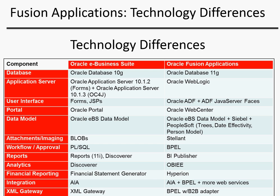The main user interface for the E-Business Suite is Oracle Forms along with some Java Server Pages. In Oracle Fusion Applications, a technology called Oracle ADF — Oracle ADF Java Server Faces — is used. Oracle ADF stands for Application Developer Framework. It's a set of libraries built into Oracle JDeveloper that allows developers to build database-based applications relatively simply.